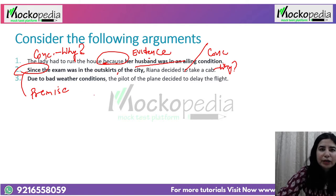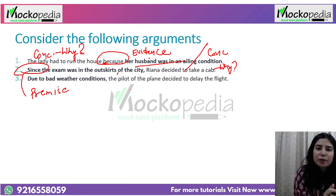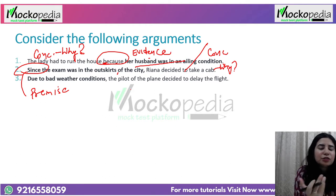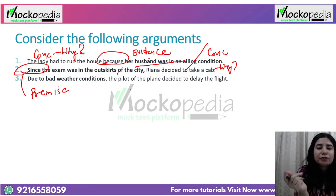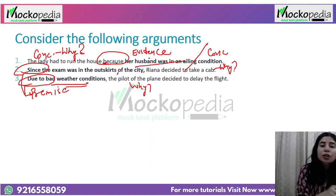If indicators are not there, take a why test. Whatever you identify as a conclusion, convert it into a why question and see whether the rest of the statement answers it. If it does, your identification of conclusion and premise remains valid. Third example: 'Due to bad weather conditions, the pilot decided to delay the flight.' 'Due to' is an indicator, and the why question is also satisfied.